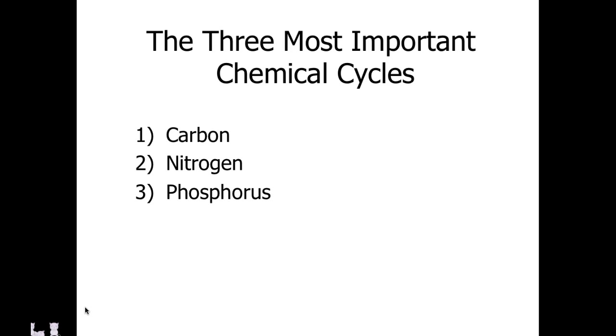The three main chemicals that we're going to be looking at that cycle through the ecosystem are carbon, nitrogen, and phosphorus.